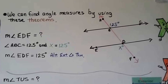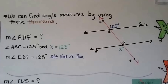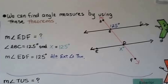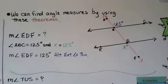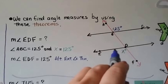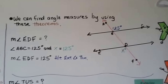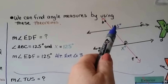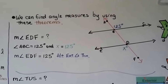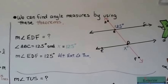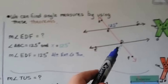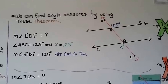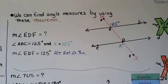Take a look at this drawing. The measure of angle EDF is what we need to find — that's where X is. We can see that angle ABC is 125 degrees. And because of the alternate exterior angles theorem, if that's 125 degrees, then angle EDF is also 125 degrees. It's on the other side of the transversal and it's in the exterior.